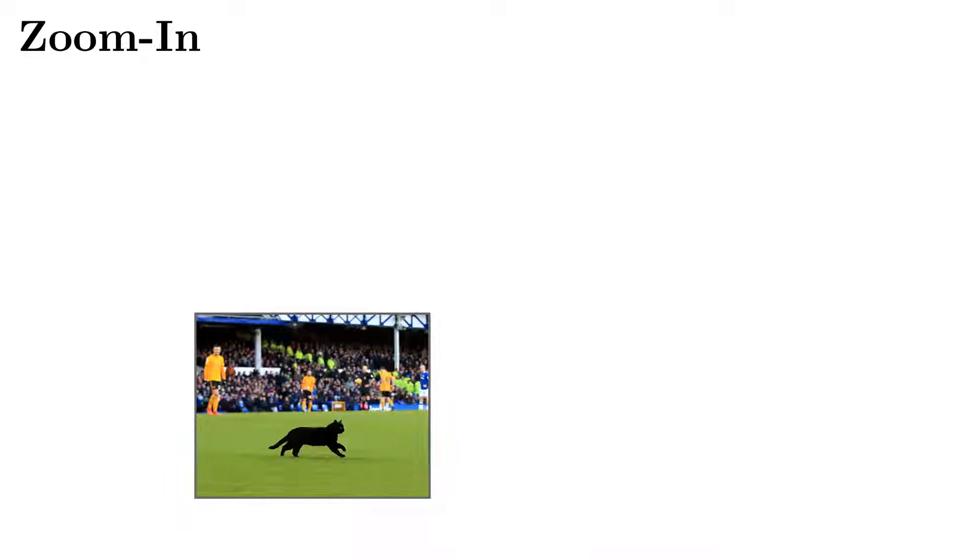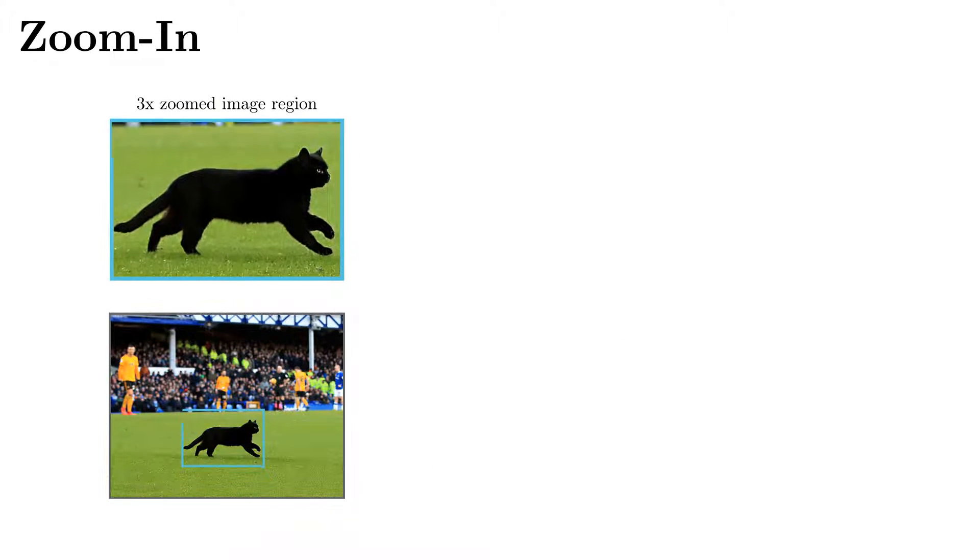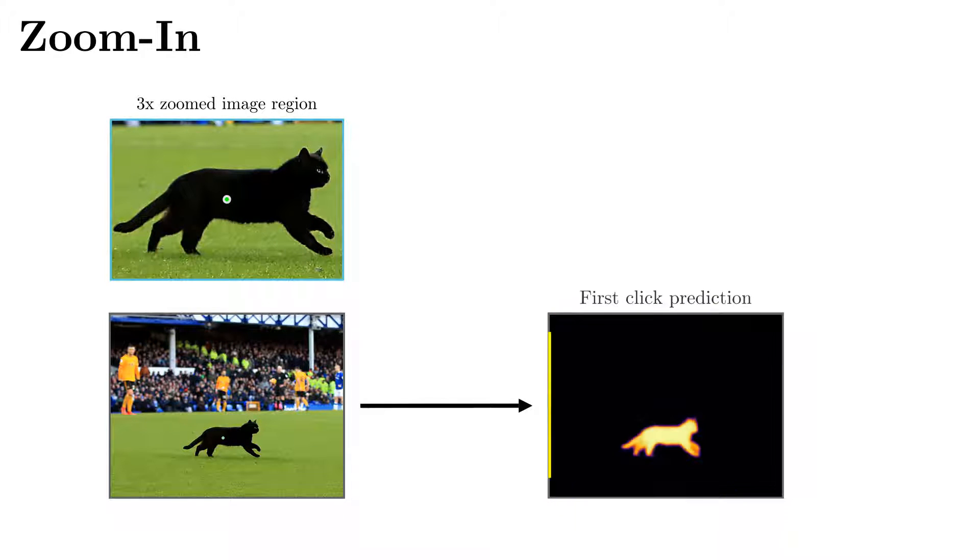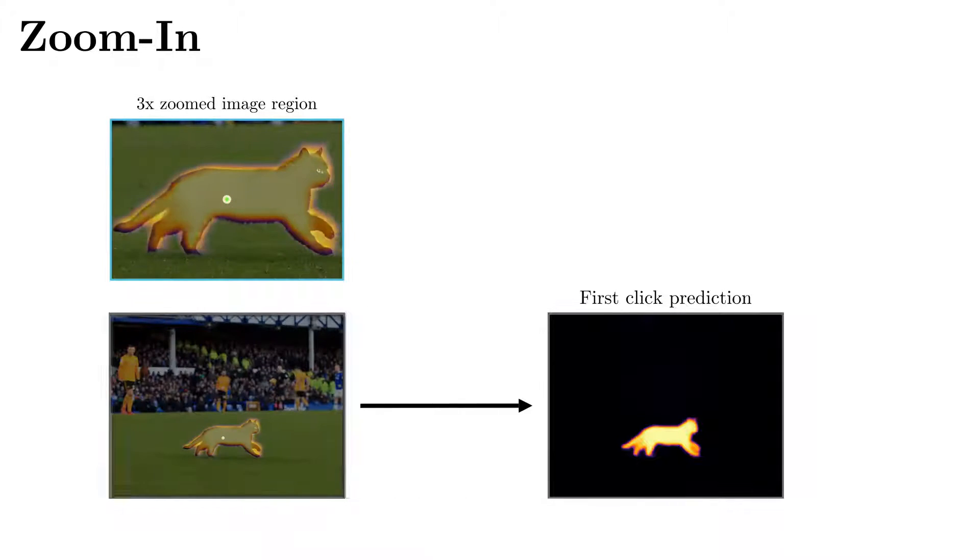Along with FBRS, we introduce a novel zoom-in technique that allows to obtain more accurate predictions for small objects. Zoom-in is quite simple and can be applied to any interactive segmentation model.